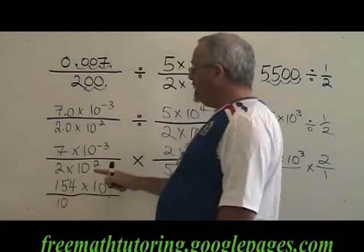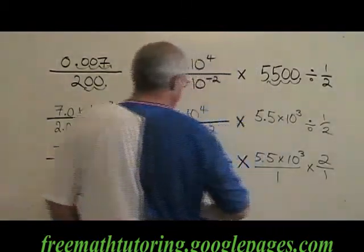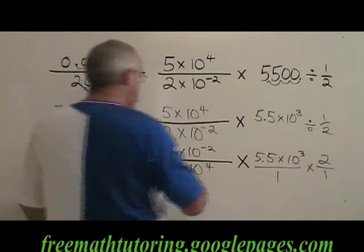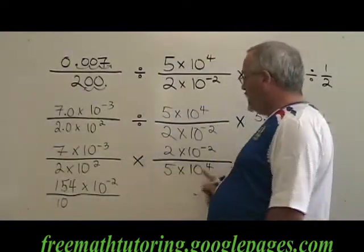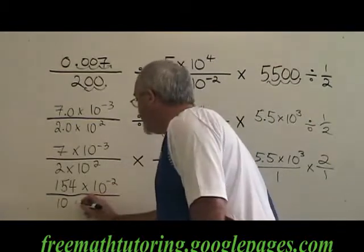The powers of 10 are 10 squared times 10 to the 4. We add the exponents. 2 plus 4 is 6. So we have 10 to the 6.